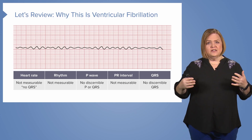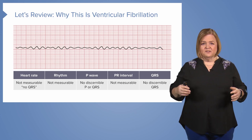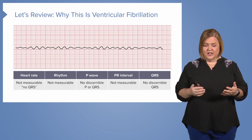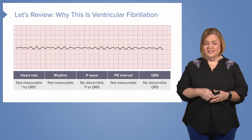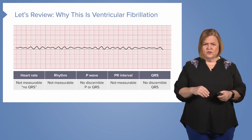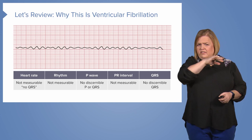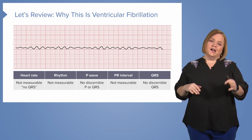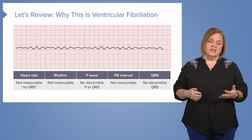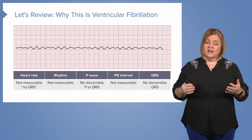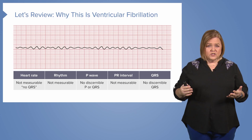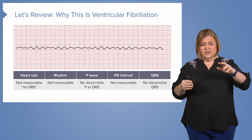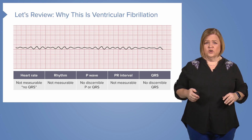So how do you identify ventricular fibrillation? We used to tell unit secretaries who were not trained in how to interpret ECGs: if the monitor goes like this or like this, come get us really fast. This is actually a rhythm that should be easily recognizable. It has none of the parts of the normal sinus rhythm that you have already learned to identify — you're just going to have a squiggly line across the screen.